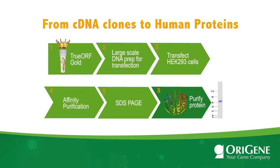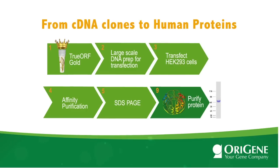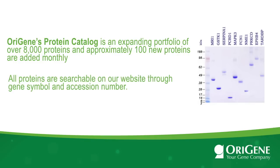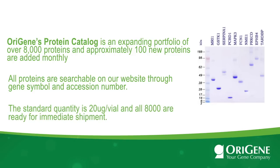Affinity columns are used to purify the recombinant protein with the DDK expression tag. The proteins are analyzed by SDS-PAGE gel electrophoresis, and data are displayed on the Orygene website. Orygene's protein catalog is an expanding portfolio of over 8,000 proteins, with approximately 100 new proteins added monthly. All proteins are searchable by gene symbol and accession number. The standard quantity is 20 micrograms per vial, and all 8,000 are ready for immediate shipment.